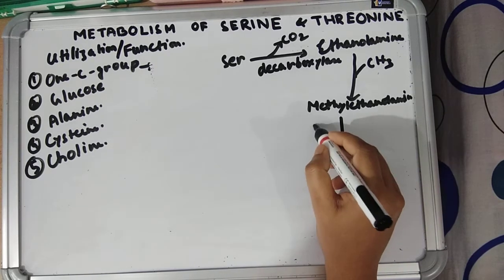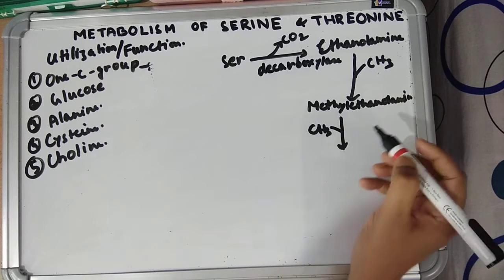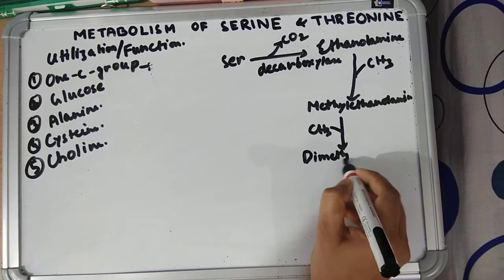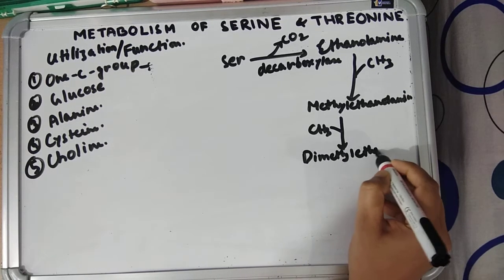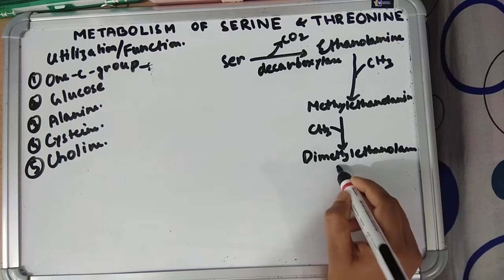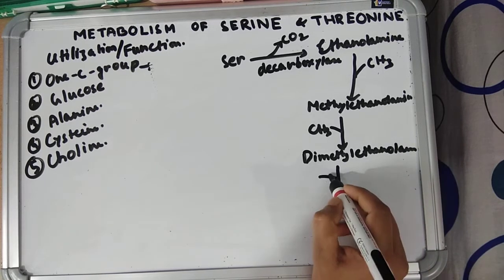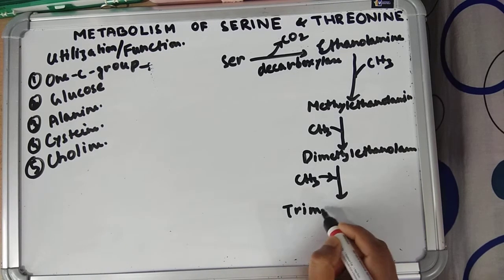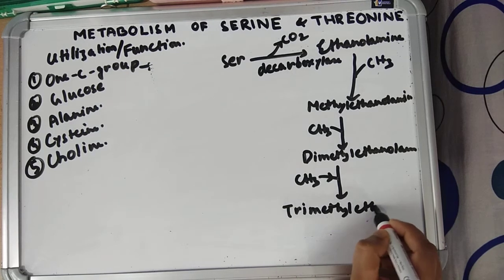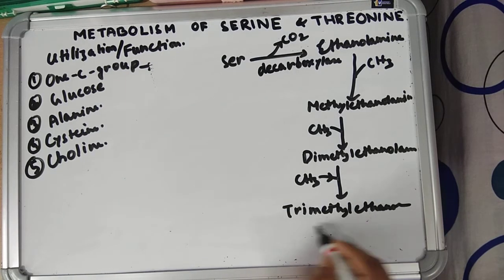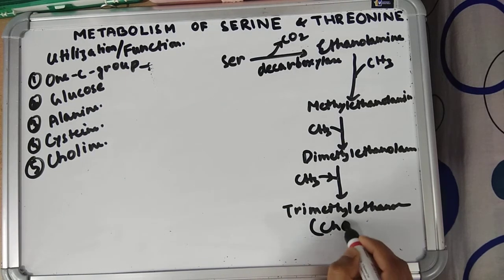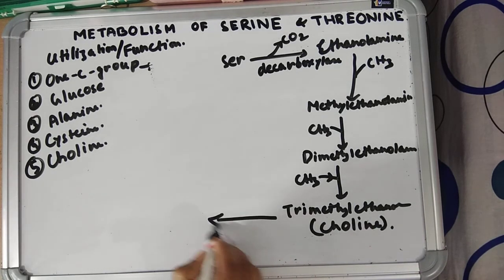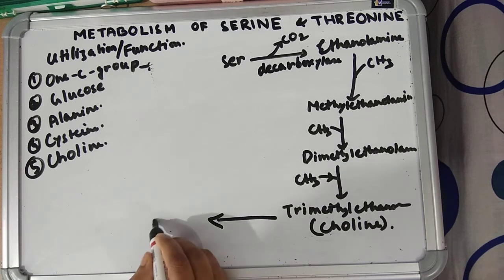The product undergoes methylation to form ethanolamine, which undergoes further methylation by methyltransferase enzyme to form dimethylethanolamine, which then undergoes another methylation by methyltransferase to form trimethylethanolamine.